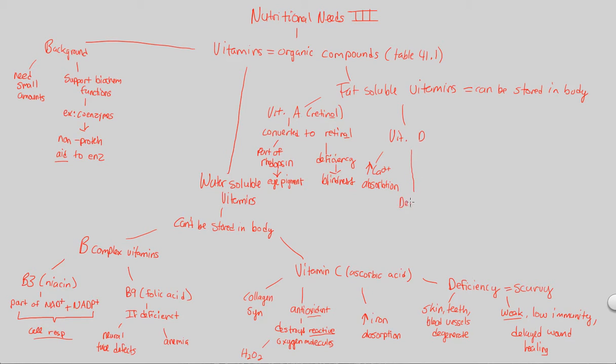If you have a deficiency in vitamin D, it actually depends on when you get the deficiency. Let's say you have a deficiency if you're a kid. A deficiency of vitamin D in kids results in something known as rickets. Rickets results in overall defective bone growth because kids are growing and developing.